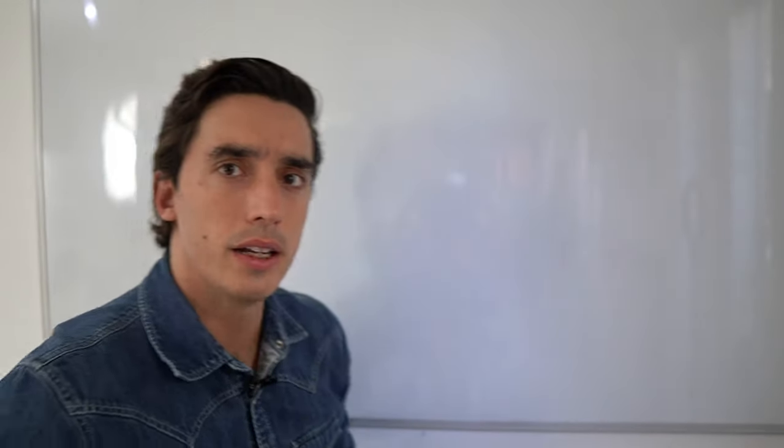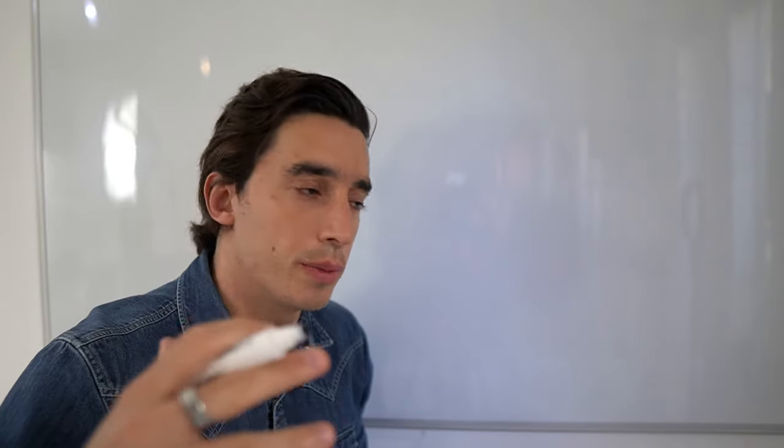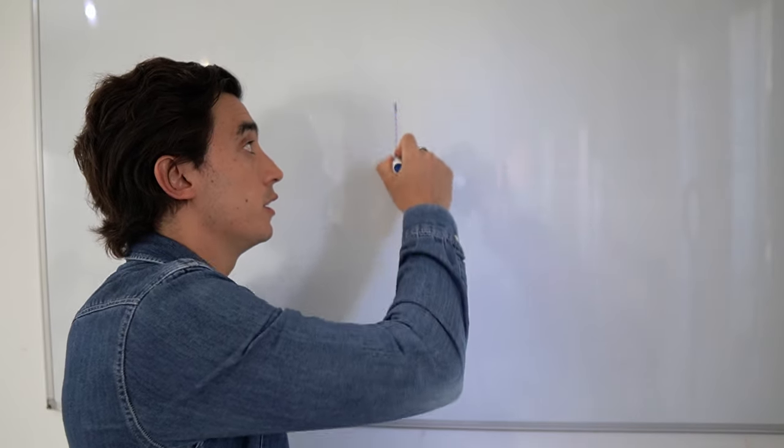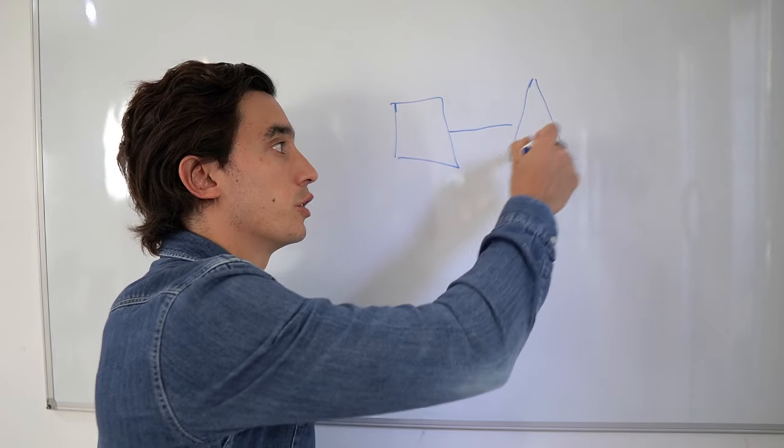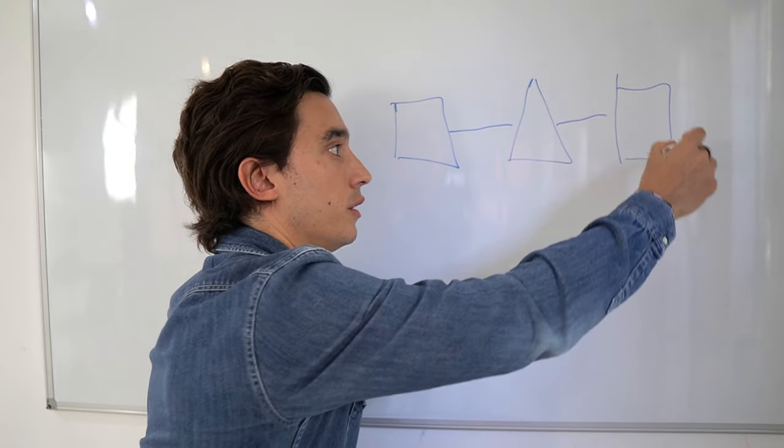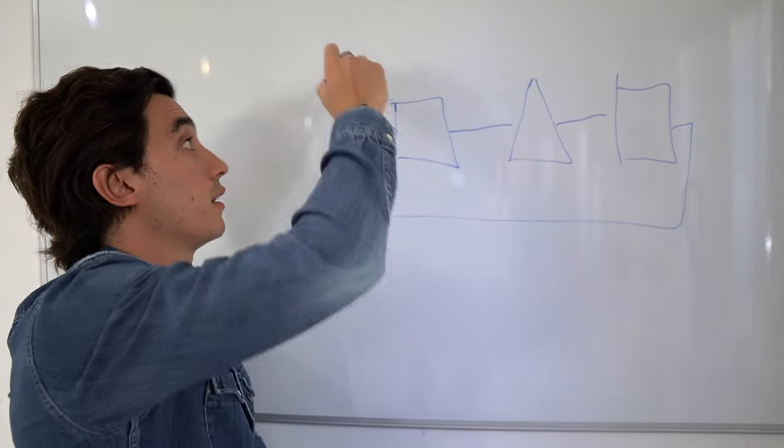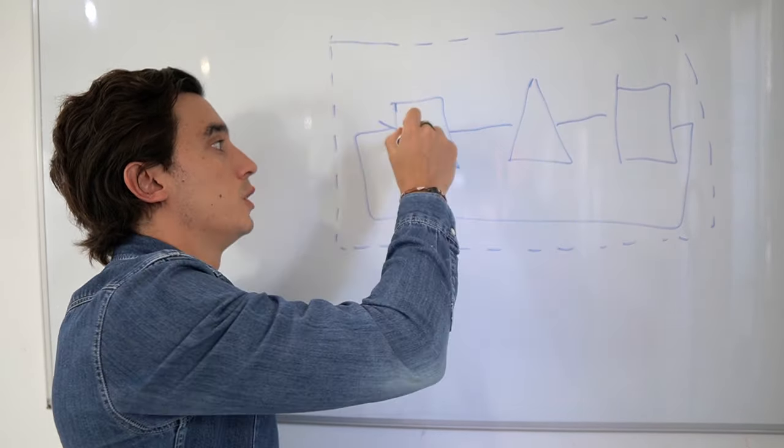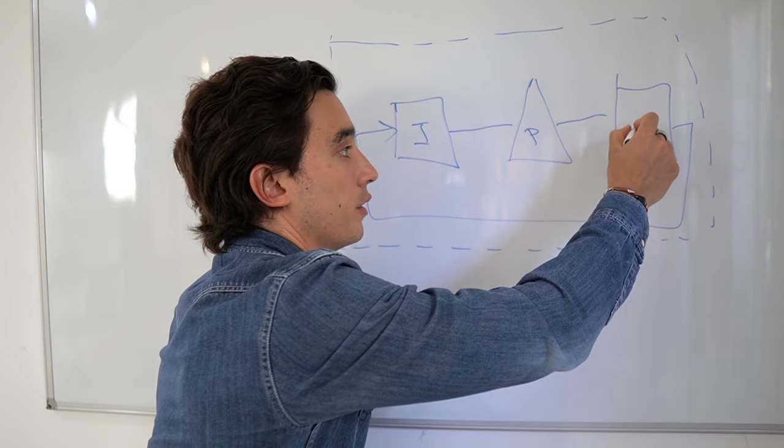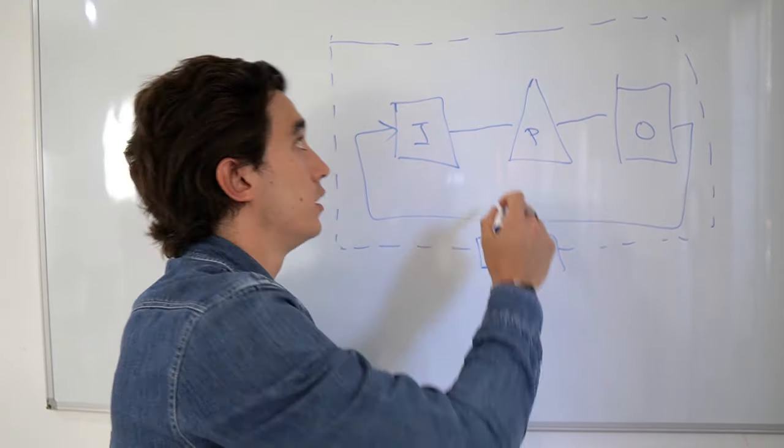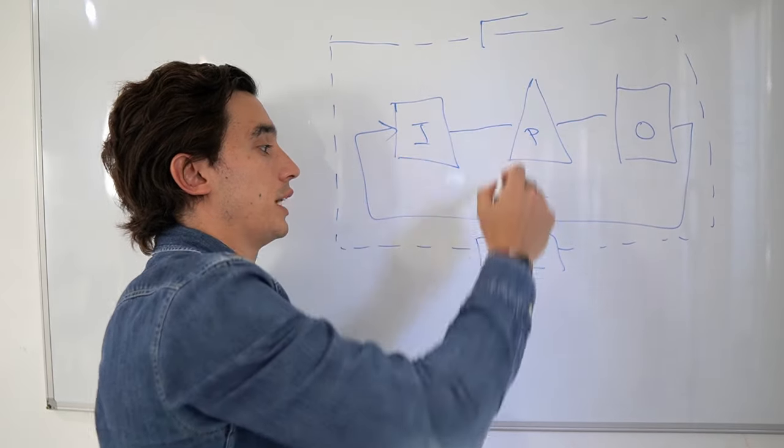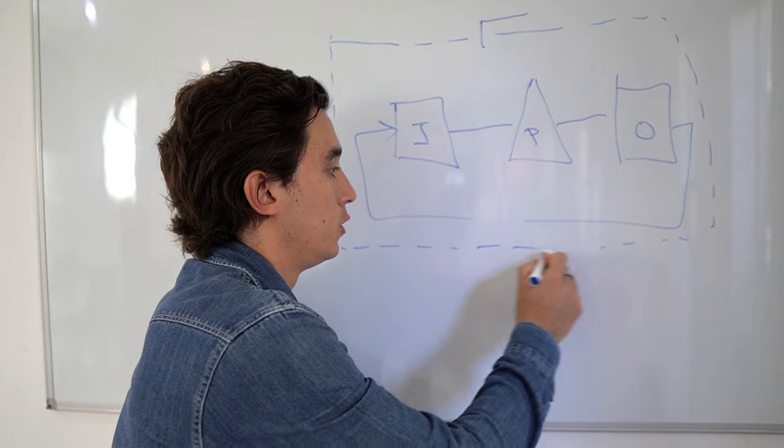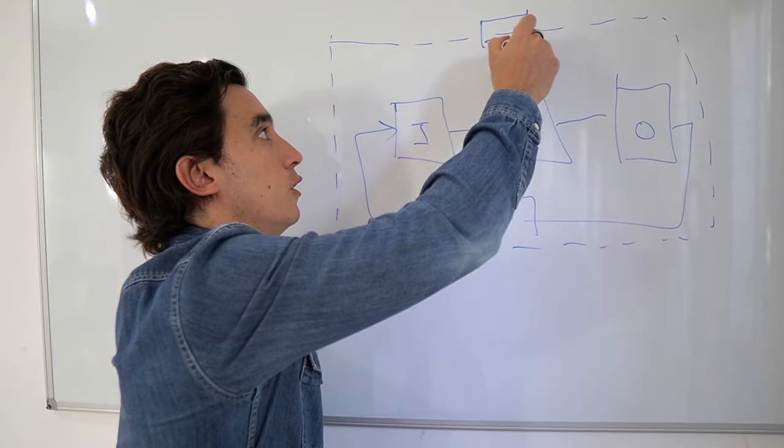Because remember that at Selfmaster we always see reality as a system. We're very big on complexity science. And the fundamental unit of analysis in complexity science is basically the system. So you've got the inputs, you've got the process, you've got the output, you've got the feedback, and of course you've got the environment. Right? So input, process, output, feedback, and environment.